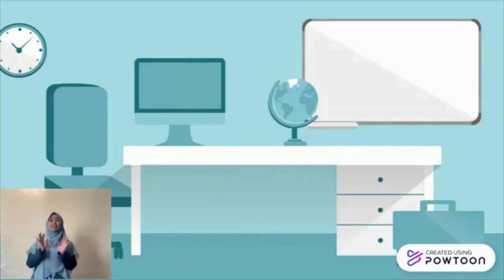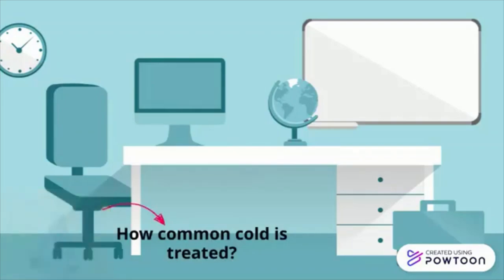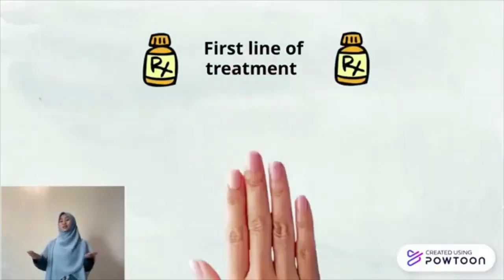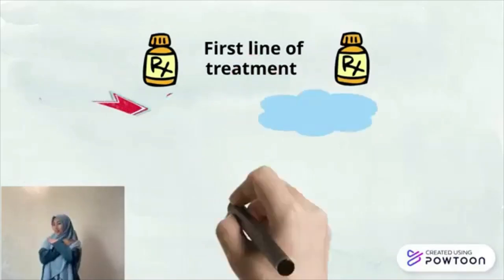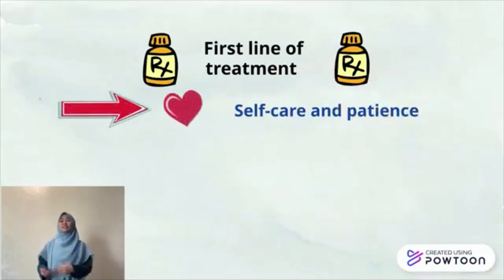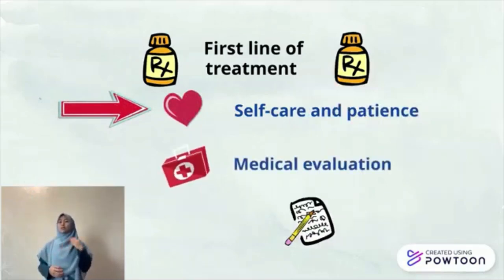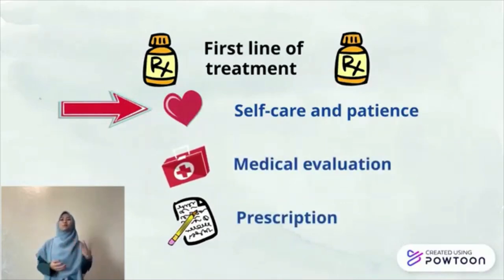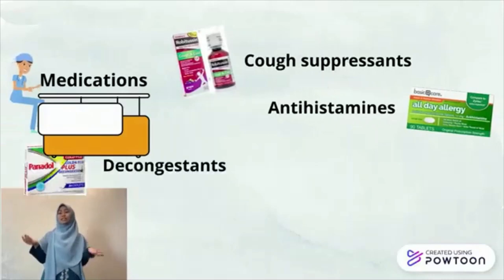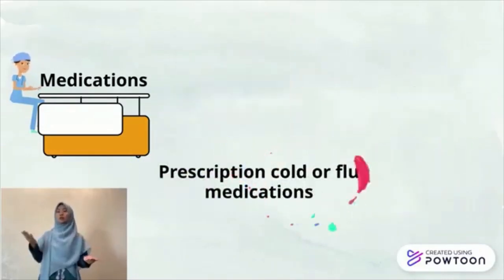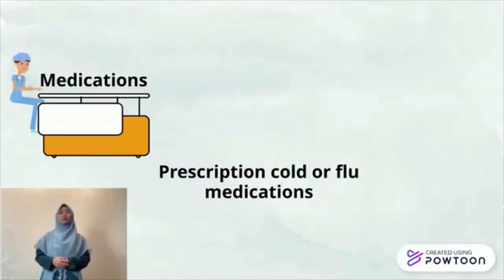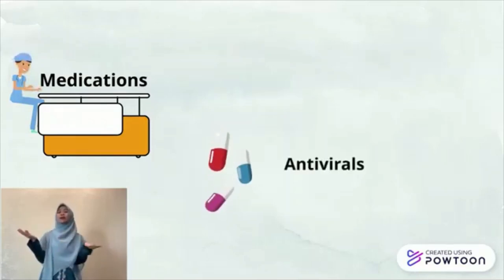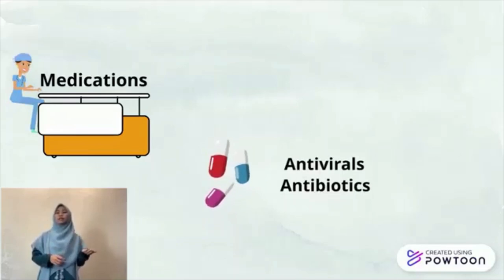It's okay, don't worry much. Let's find out how common cold is treated. The first line of treatment for the common cold and influenza is self-care and patience, as you allow these viral illnesses to simply run their course. But there are cases in which you may need a medical evaluation and prescription medication to tame severe symptoms, prevent a worsening of your condition, or avoid related complications. Cough suppressants, antihistamines, decongestants and nasal steroids are prescription cold or flu medications that can help provide some symptom relief, while the main job of antivirals and antibiotics is to stop what's causing your illness in its tracks.